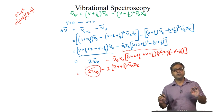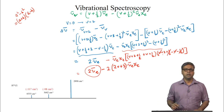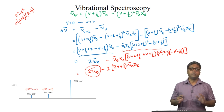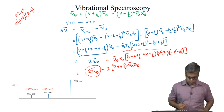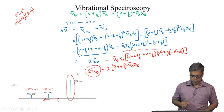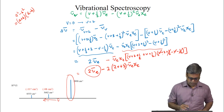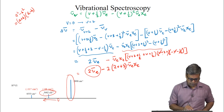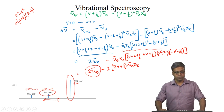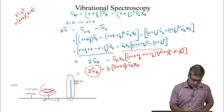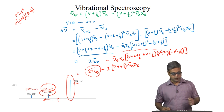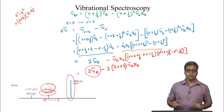Now let us look at the experimental frequencies of HCl. The first overtone is at 5682 wavenumbers, but the fundamental was at 2890 wavenumbers — a difference of 98 wavenumbers. So the first overtone is not exactly twice 2890, but twice 2890 minus 98 wavenumbers.